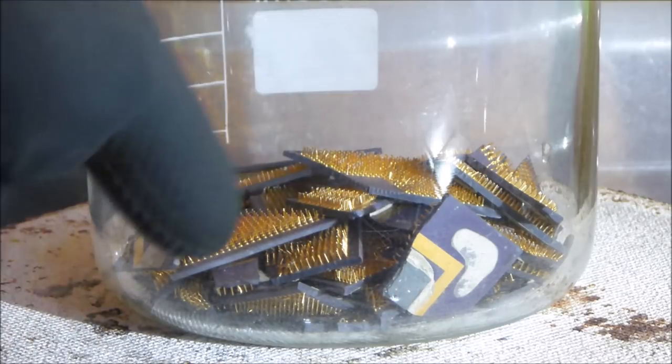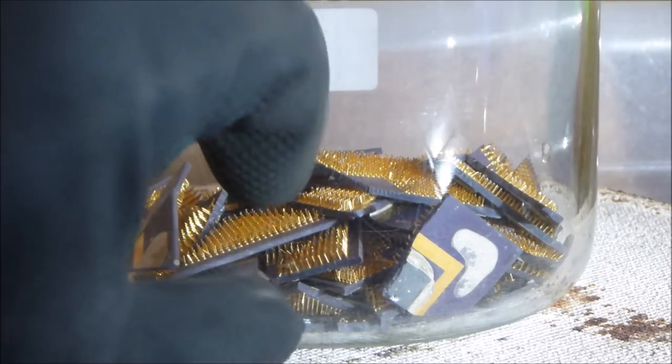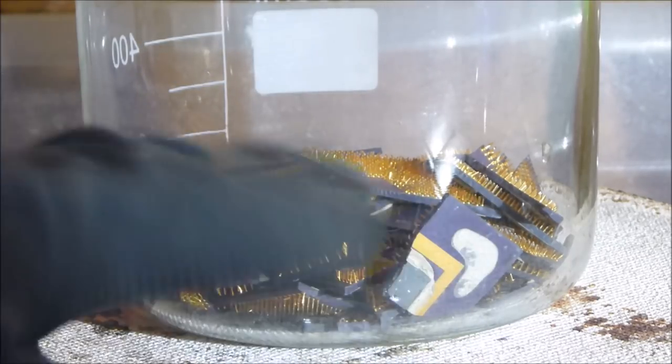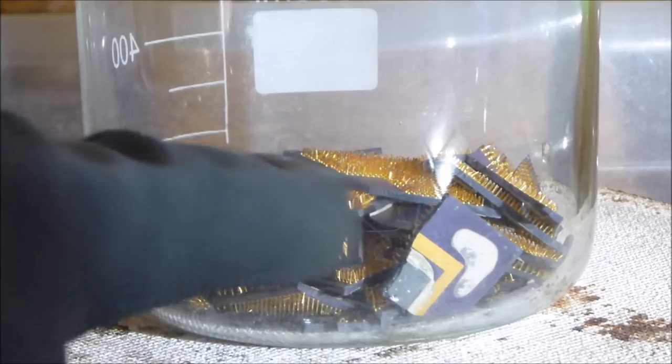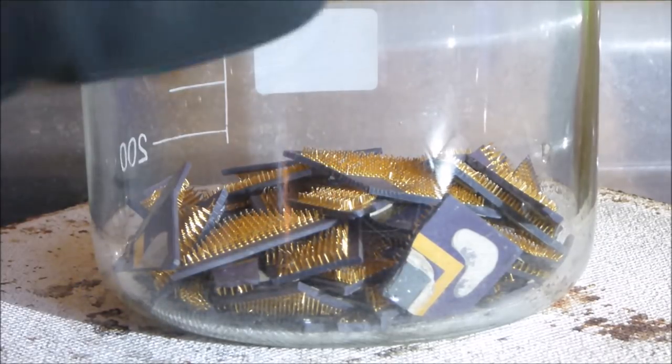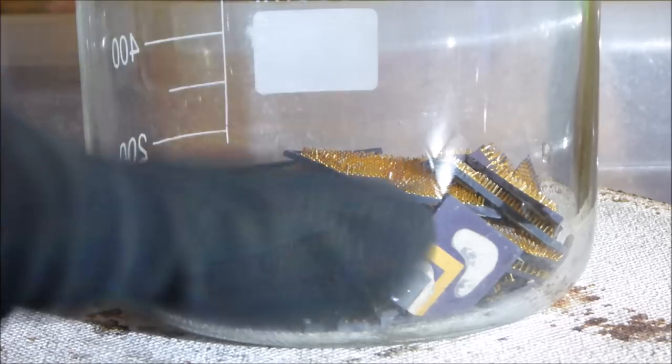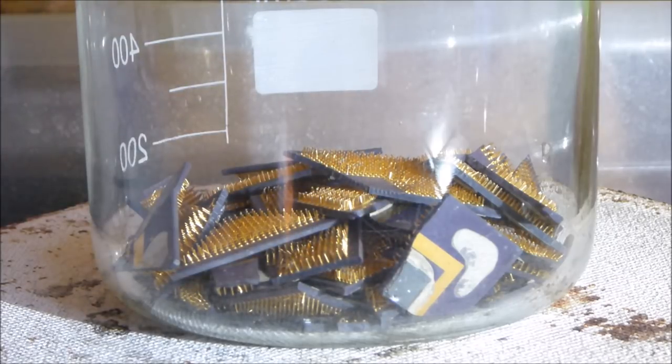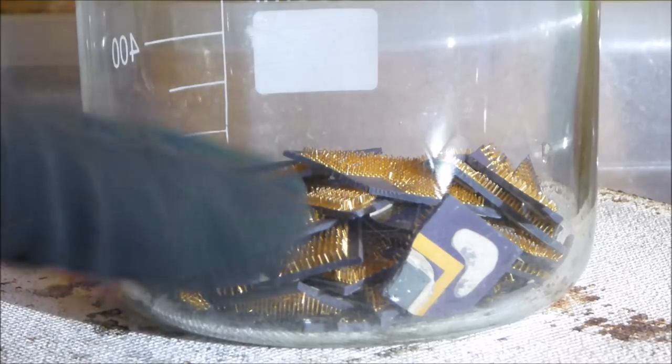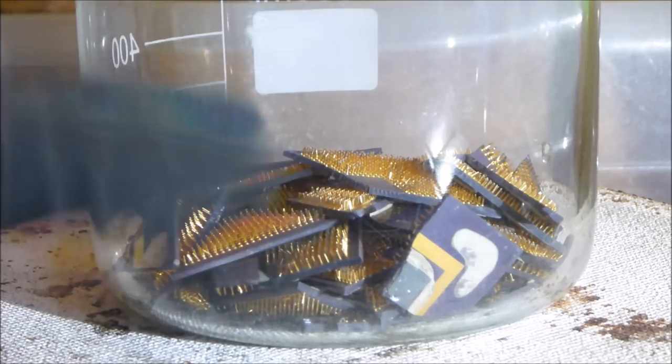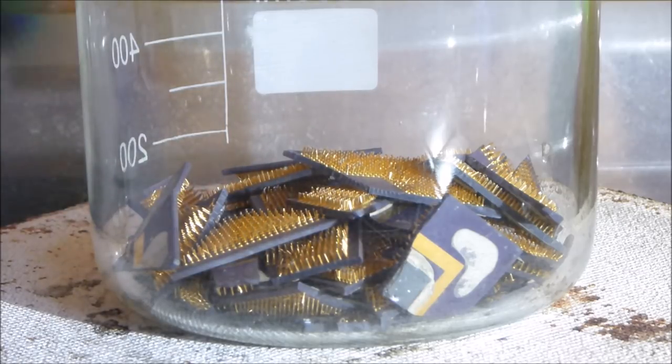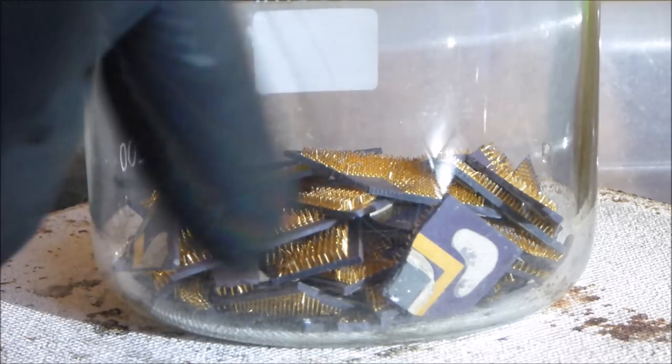So what I'm going to do now is just cover this in hydrochloric acid, just enough to cover all the ICs, just some 38% hydrochloric acid. I'm going to warm this up to about 75 degrees Celsius and then I'm going to start adding nitric acid in. I'll probably start with about 5 milliliters and then from there on I'll go in 1 milliliter increments until I see that essentially most of the pins are dissolved.